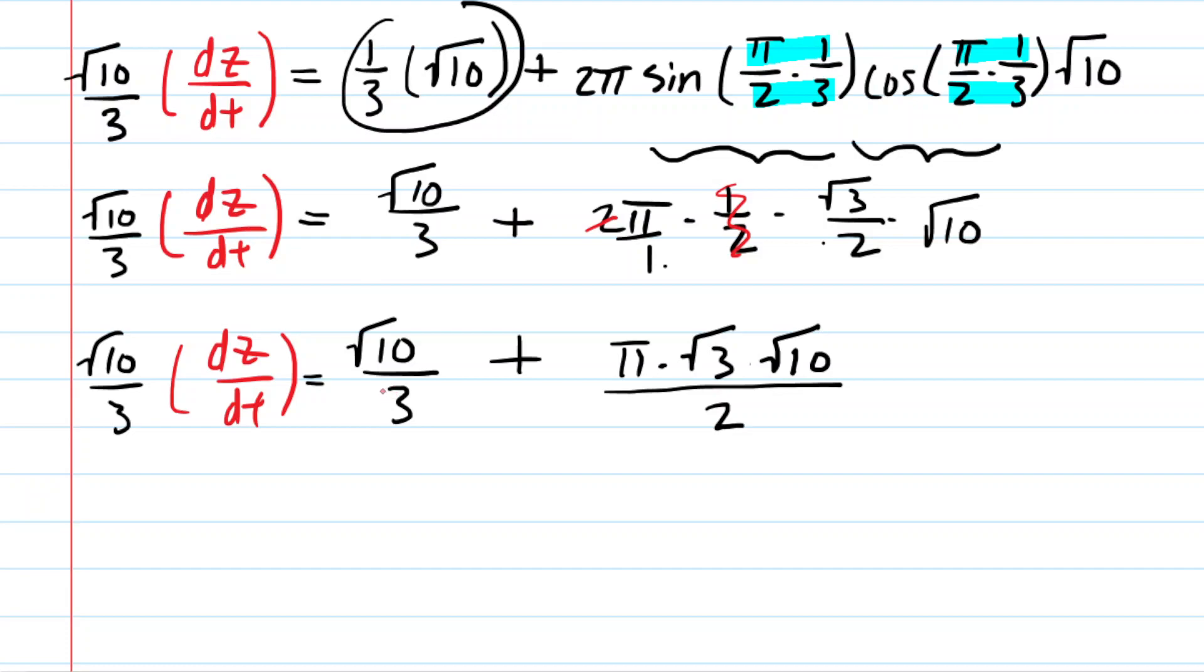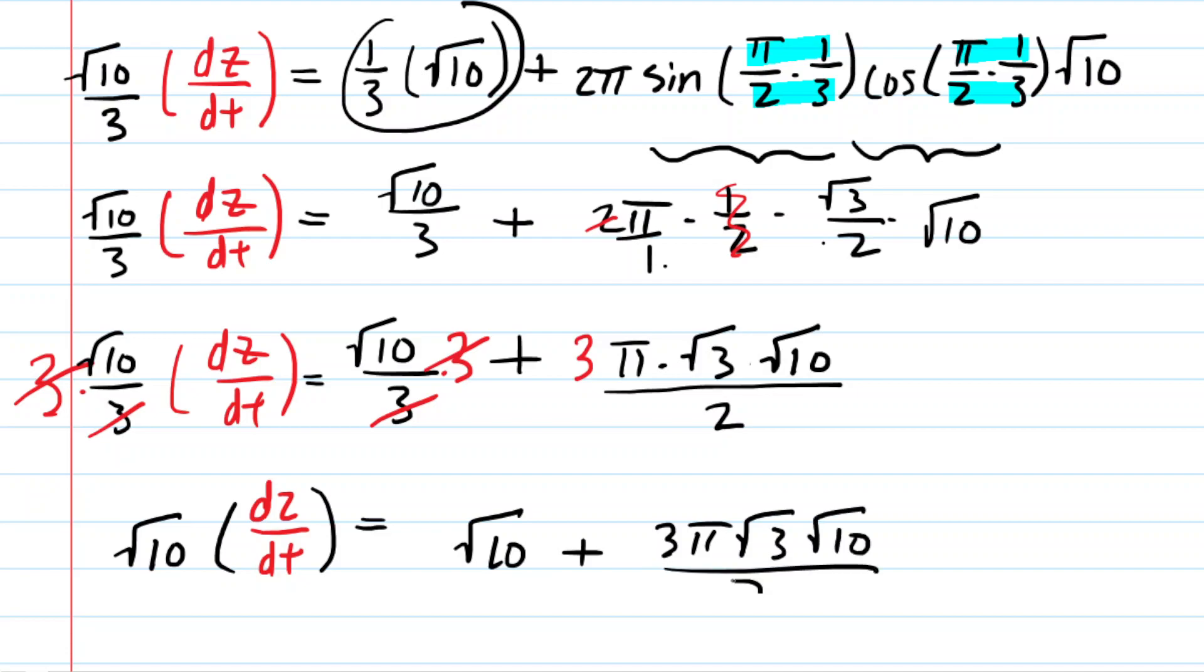Let's see. Next, we might multiply every term by 3 to cancel some denominators. So for example, multiply this term by 3, multiply this term by 3, and then multiply this term by 3. So these 3s would cancel, those 3s would cancel as well. So now we just have √10 times dz/dt on the left side. And on the right side, we have √10 plus 3π√3√10 all over 2.